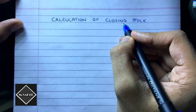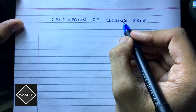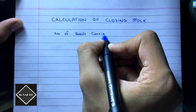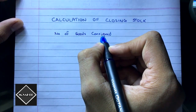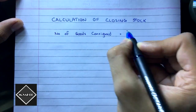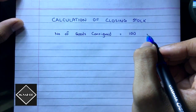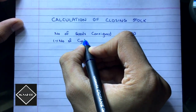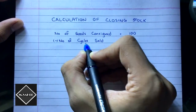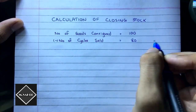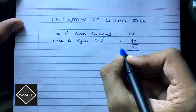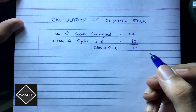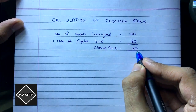First, you need to calculate the closing stock — the stock unsold by the consignee. Take the number of goods consigned, which is 100 cycles, minus the number of cycles sold, which is 80, giving us 20. This is the closing stock remaining with the consignee.